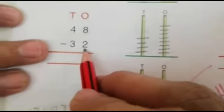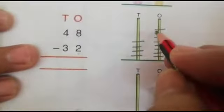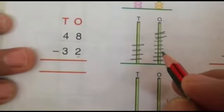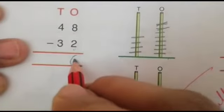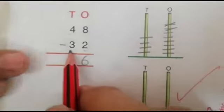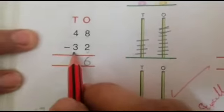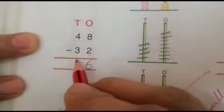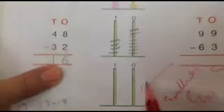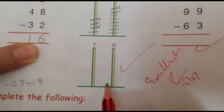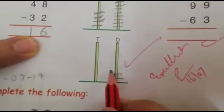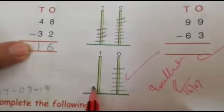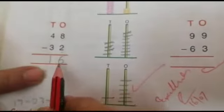How many beads we have to cut from 1s place? 2. 1 and 2. How many are left? 1, 2, 3, 4, 5, 6. 6 we will write here. And how many 10s we have to cut from 10s place? 3. 1, 2, 3. How many are left? 1. It means 6 1s, we will put 6 beads in 1s place and 1 in 10s place. The answer is 16.